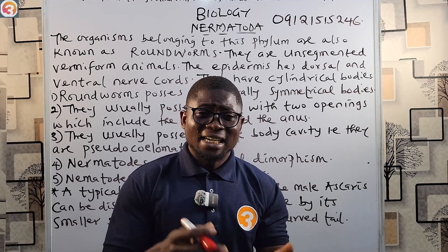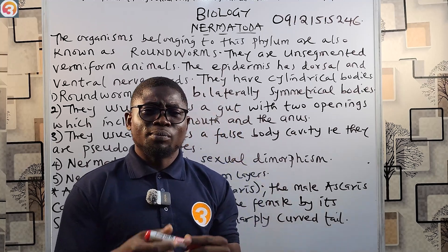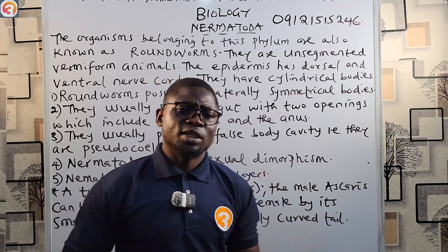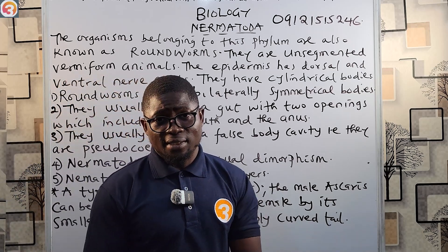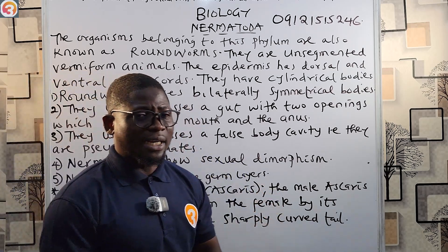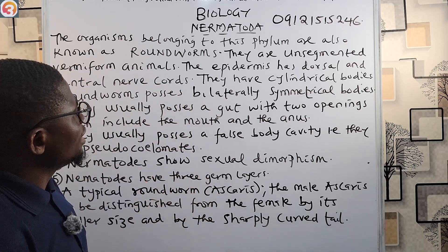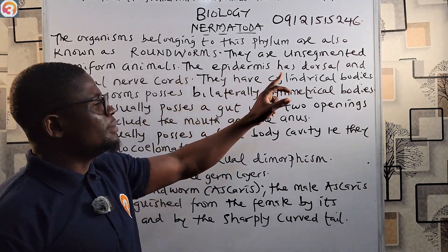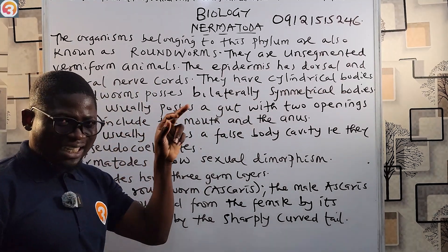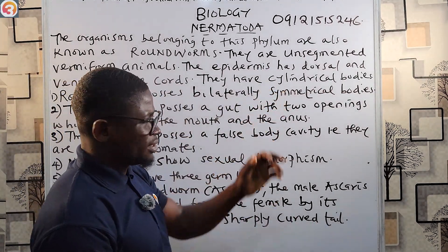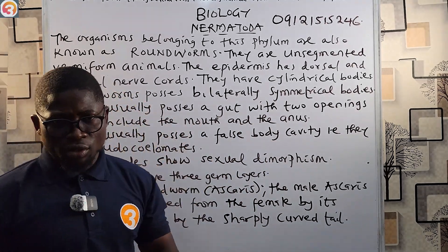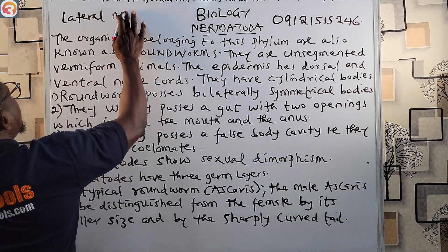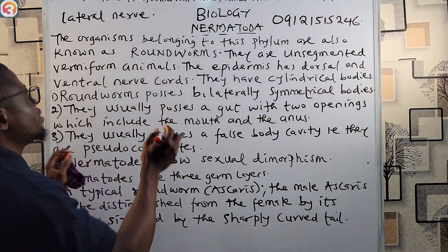Nematodes are also very beneficial but can be deadly — they can destroy plants by eating the roots, thereby reducing nutrient uptake. They are also dangerous to insects, so they can be used to control pests. Their epidermis has dorsal, ventral, and lateral nerve cords.